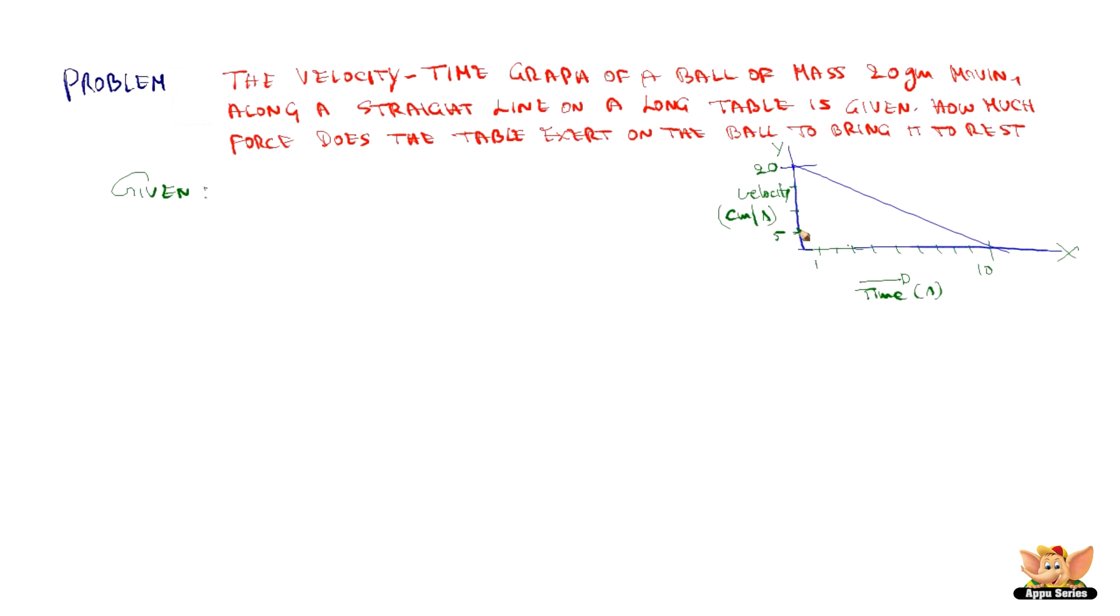So we got from the graph that it started from here on a straight line, so the initial velocity u is 20 cm per second. And final velocity, we see at the end of the straight line, the velocity is 0 cm per second. And the time taken for this is 10 seconds.